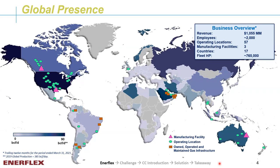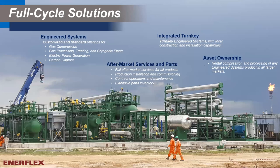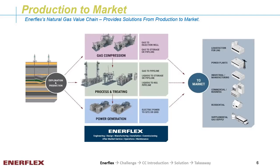Enerflex is a global leader in delivering natural gas solutions. The company operates in 17 countries with 57 locations and about 2,000 employees. Enerflex offers full-cycle solutions including engineered systems, integrated turnkey, aftermarket services and parts, and asset ownership. The core products Enerflex offers span from production to market — specifically gas compression, processing and treating, and power generation. The solution we talk about today is within our gas treating solutions.